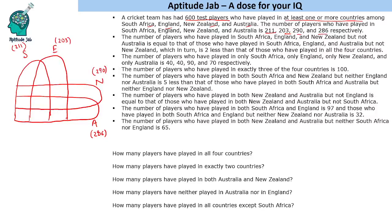Now if we read these statements, some involve equality, some involve comparisons. The best way to crack these questions is to look at statements that give direct information first. The number of players who have played in only South Africa, only England, only New Zealand and only Australia are 40, 40, 90 and 70 respectively. So these values are now placed in the diagram.